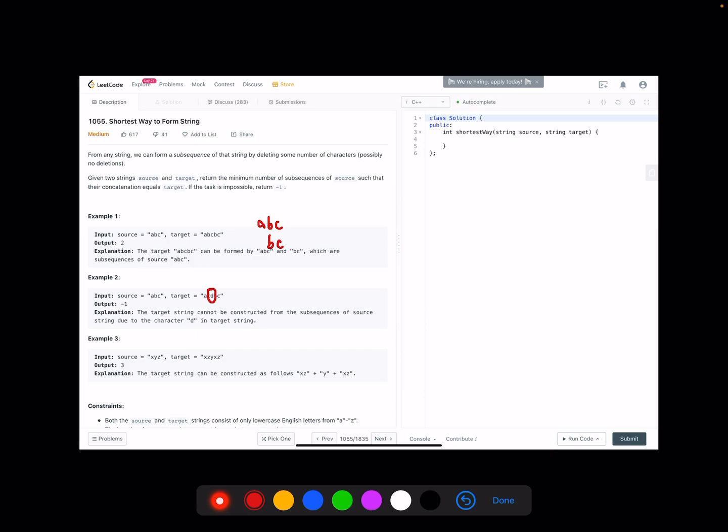For the third example, we need three copies because we use XZ for the first copy and we use Y for the second copy and we use XZ for the third copy to formulate the target string. So we need three copies.